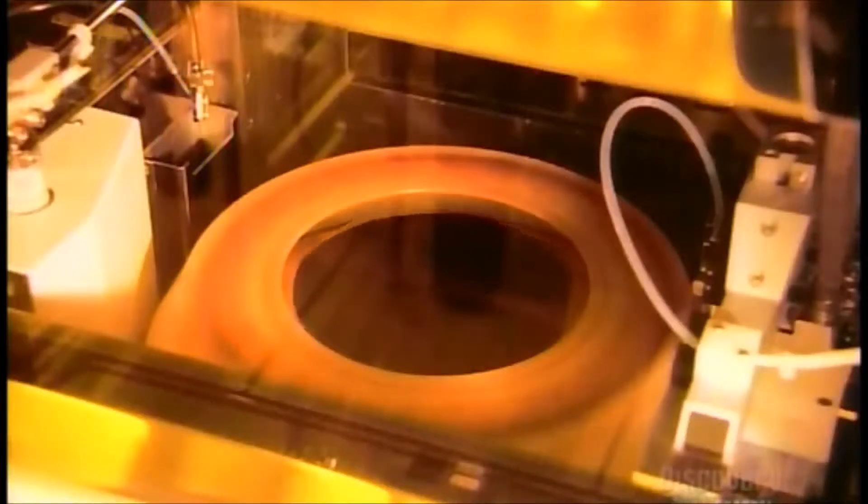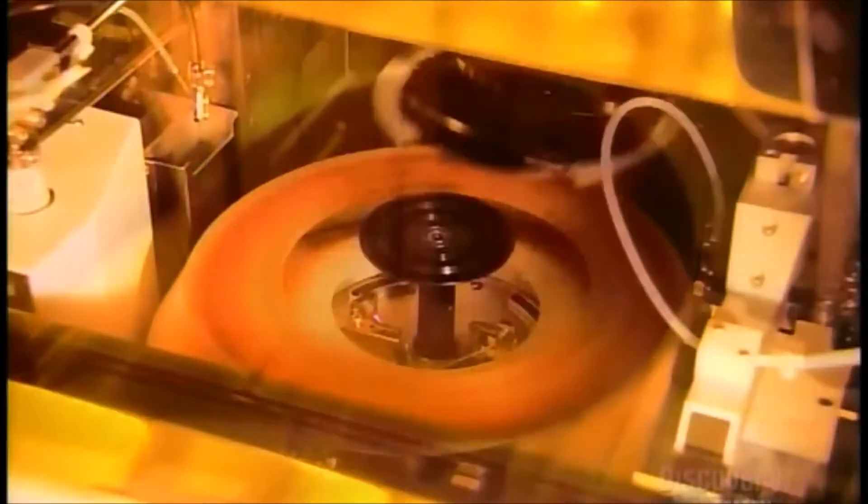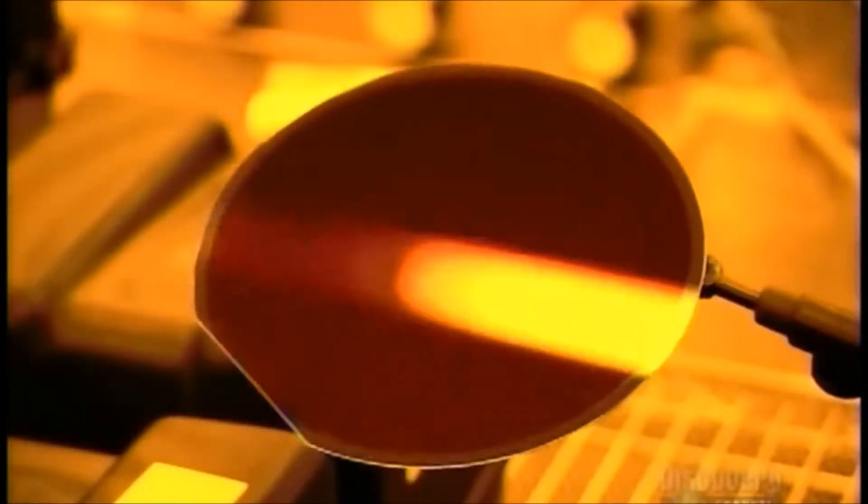Onto that, a robot applies a one micron thick layer of photosensitive resin. When exposed to light, the resin will undergo a chemical reaction.